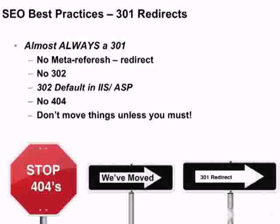There are lots of different types of redirects: 404s, 301s, and a 200 code means OK. If you want to look up these response codes, you can find them on Wikipedia. The one you need to know most is that it's almost always a 301 redirect. If you need to move content from one place to another and preserve the link equity, this is why we use a 301. In ASP and IIS, a 302 is the default, which technically means a temporary redirect — a 301 is a permanent redirect.